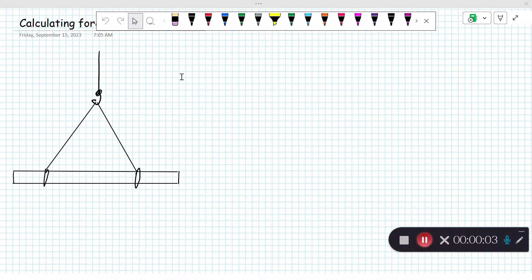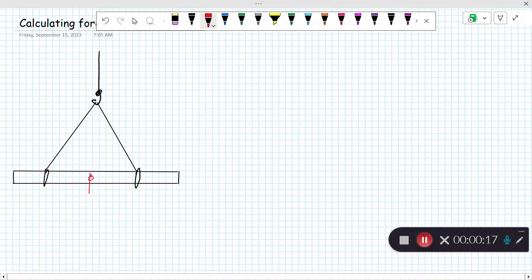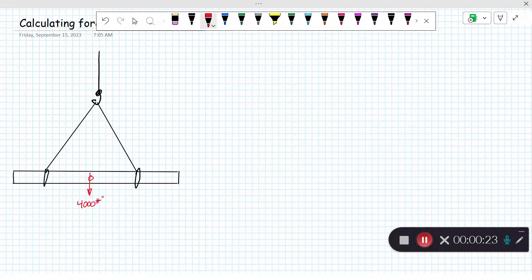We're going to calculate the force in the slings in this situation where we have a steel beam being supported by a crane hook. Let's start out and look at the weight of our beam. Let's say it's 4,000 pounds.